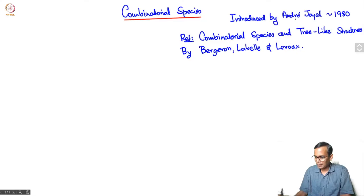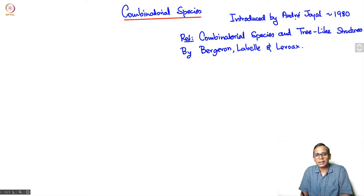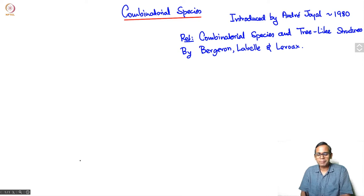In this lecture, I am going to introduce you to the notion of a combinatorial species. This idea was introduced by André Joyal in the 1980s and it has become a powerful way to understand labeled structures and manipulate generating functions, or particularly exponential generating functions.